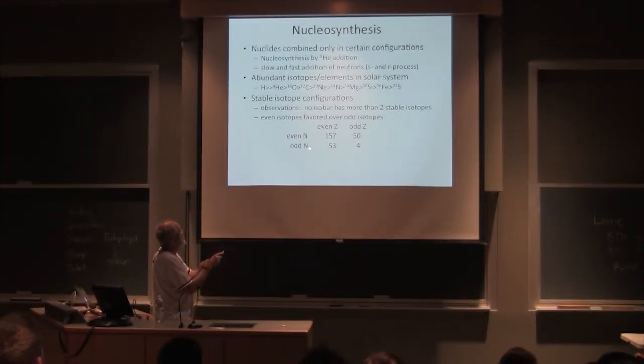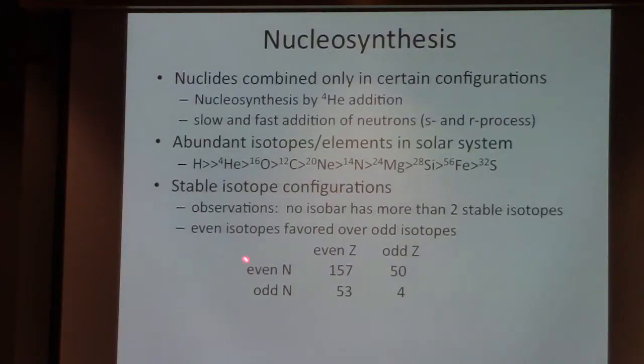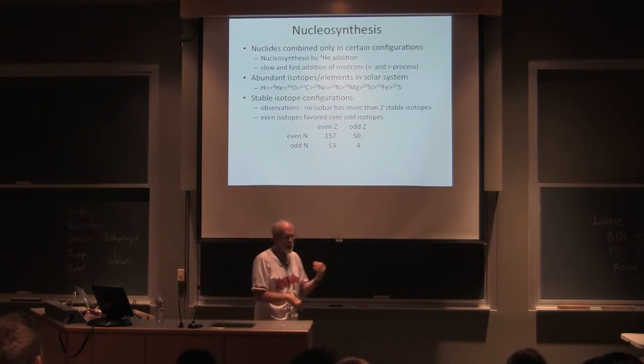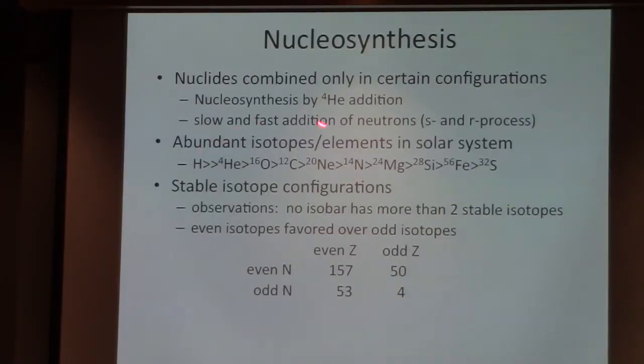So nucleosynthesis is what I really want to talk about in this first part of the lecture. What we see is there's only certain allowable configurations of nuclei. Most of these are made in stars. We do it by the addition of neutrons and this is either something called an S or an R process - S equals slow, R equals rapid. If we look at the isotopes in our planet or the abundant isotopes and elements in our solar system, this is the order that we have.